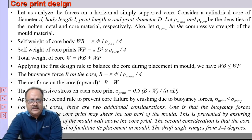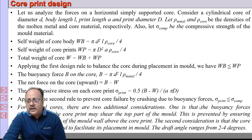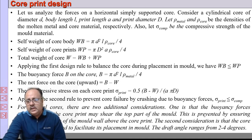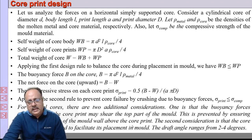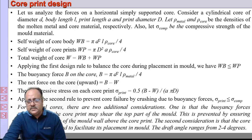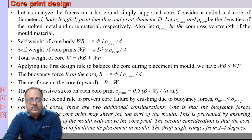This formula applies for horizontal cores. For vertical cores, two additional considerations apply: first, the buoyancy forces transmitted by the core print may shear the top part of the mold — this is prevented by ensuring sufficient thickness of the mold wall above the core print. Second, the core print must be tapered to facilitate placement in the mold, with a draft angle ranging from 2 to 4 degrees.